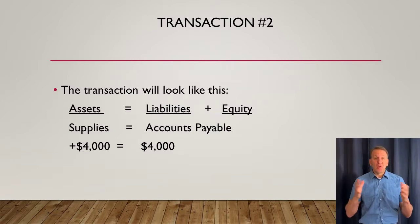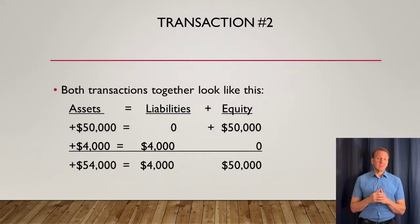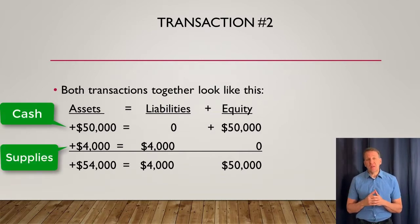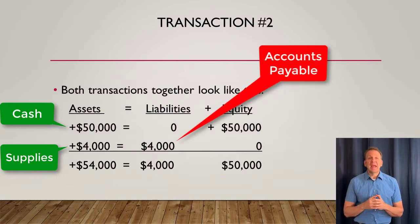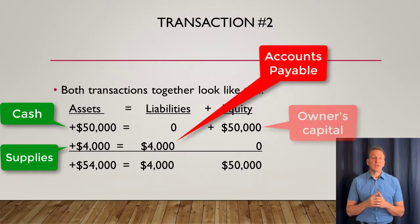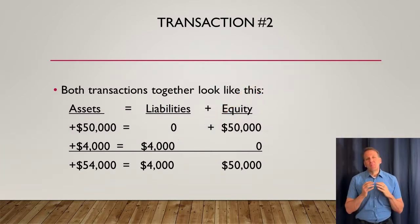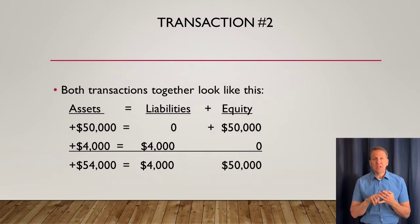Now we can look at both transactions together. Our assets are $54,000, made up of cash of $50,000 and supplies of $4,000. On the other side, liabilities are $4,000 — that's our accounts payable — and equity is $50,000 from the owner's capital account. Make sure you understand these transactions, the accounting equation, and the types of accounts that go under assets, liabilities, and equity.